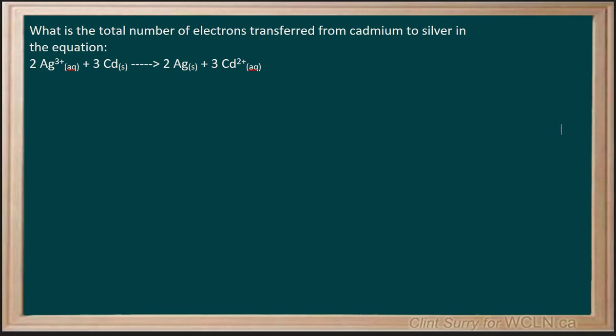What is the total number of electrons transferred from cadmium to silver in this equation? One of the easiest ways to look at this is to see what is involved with the half reactions.